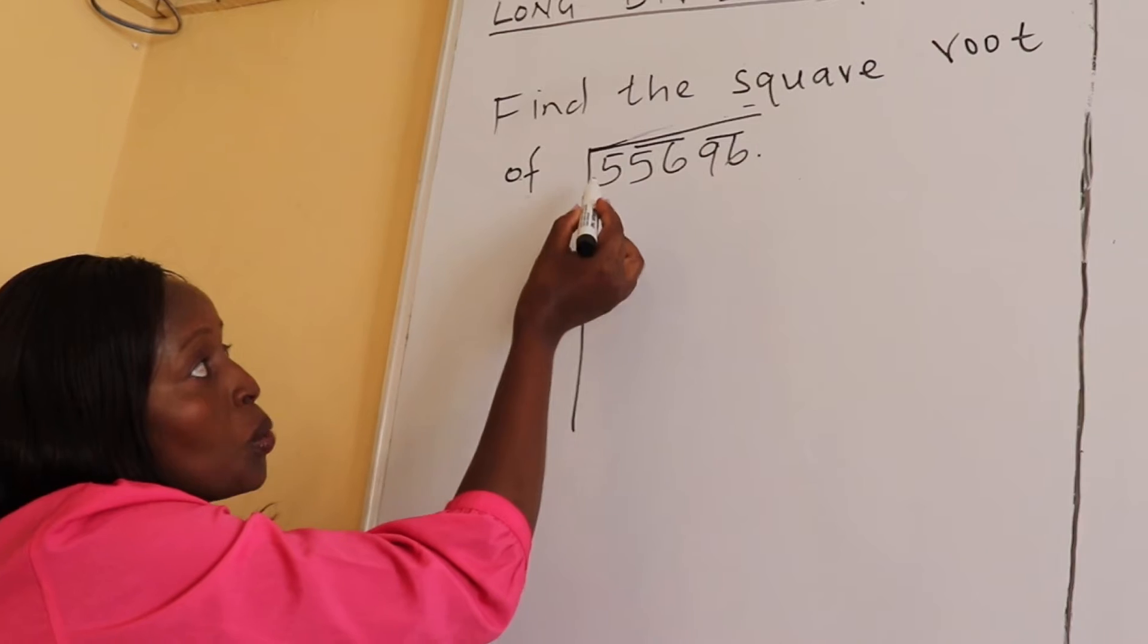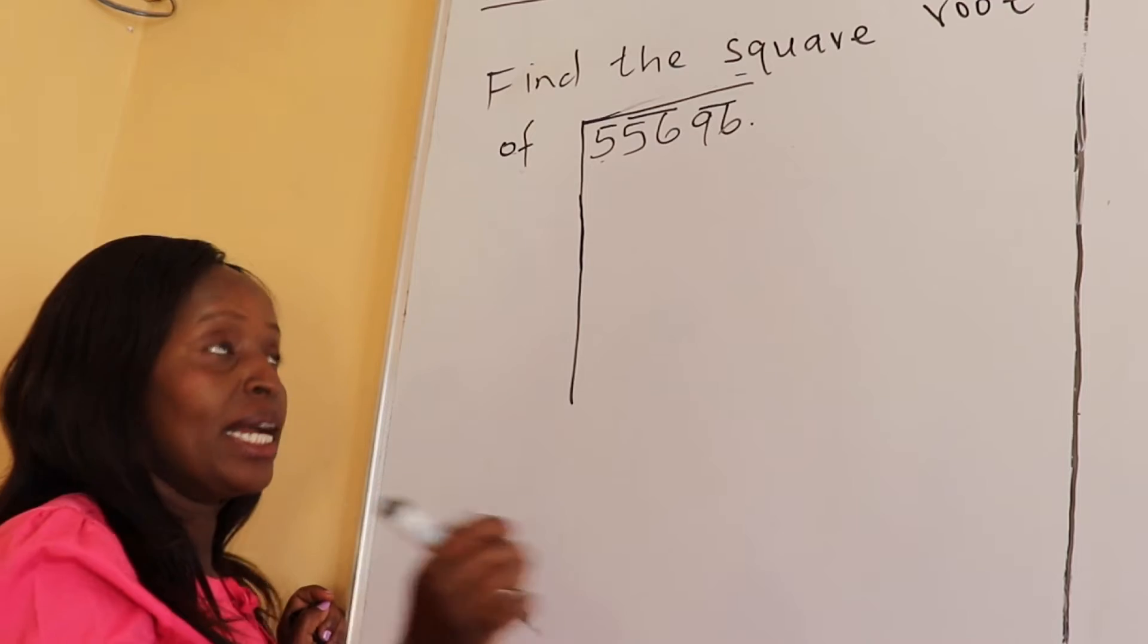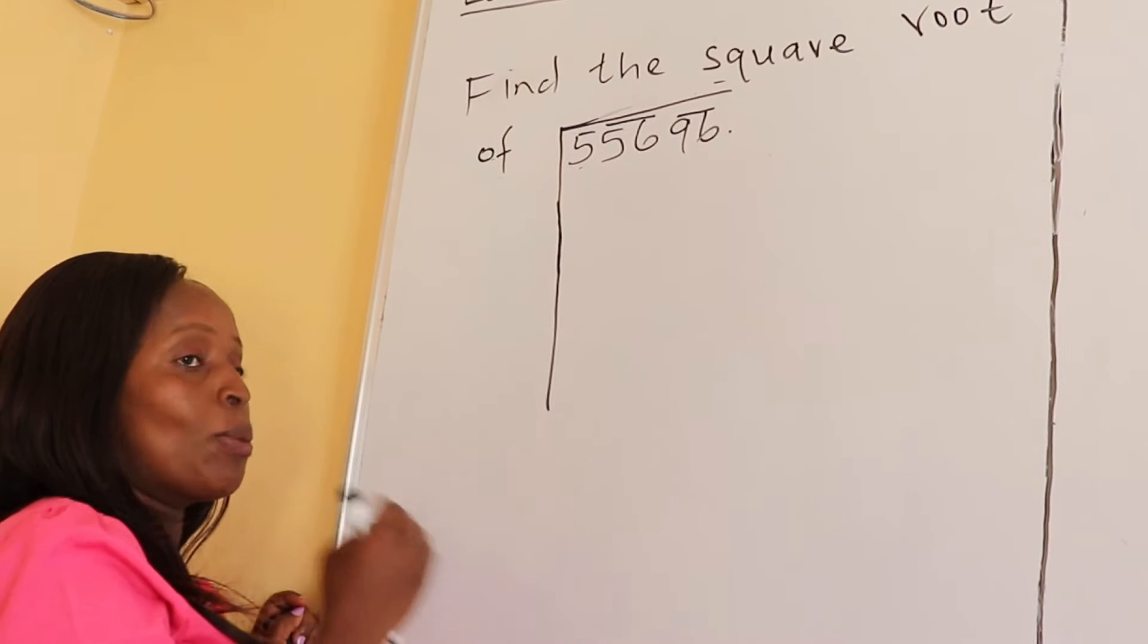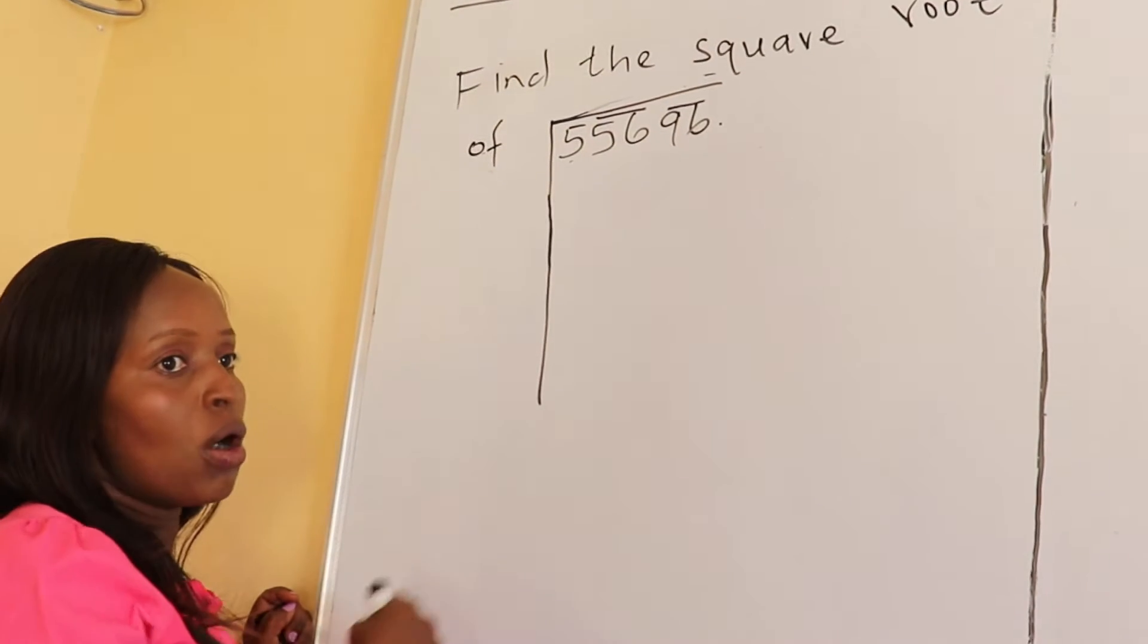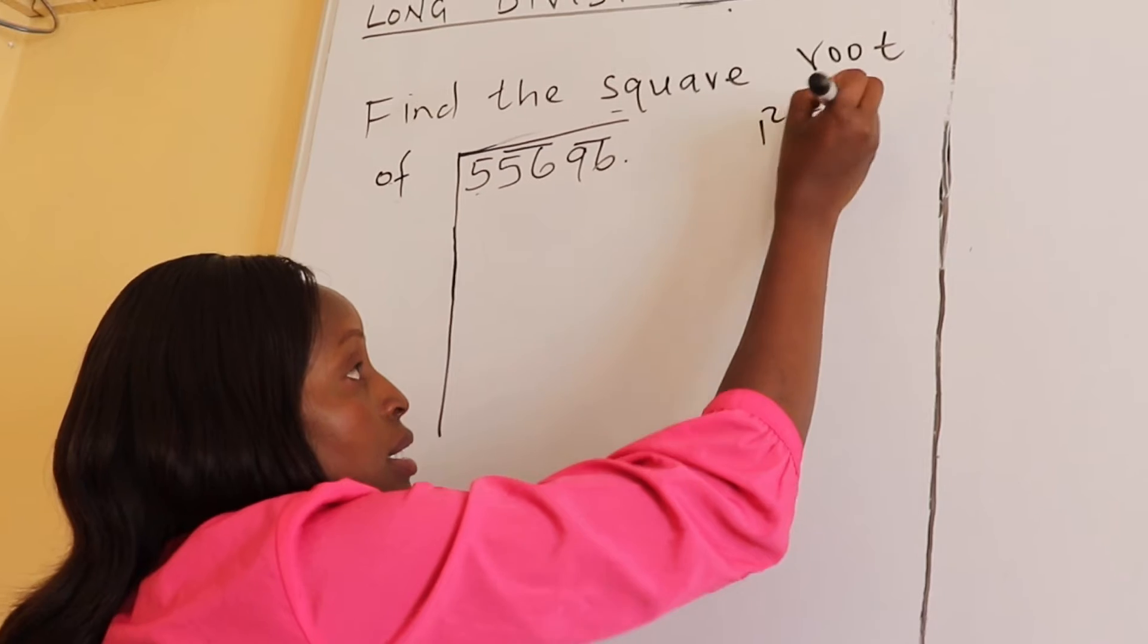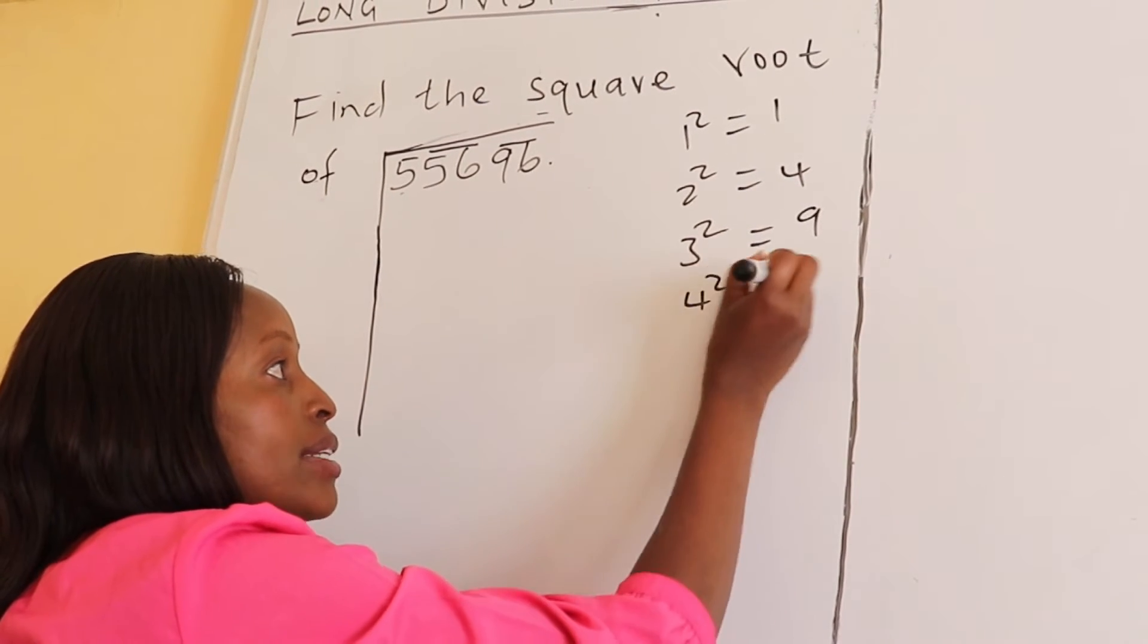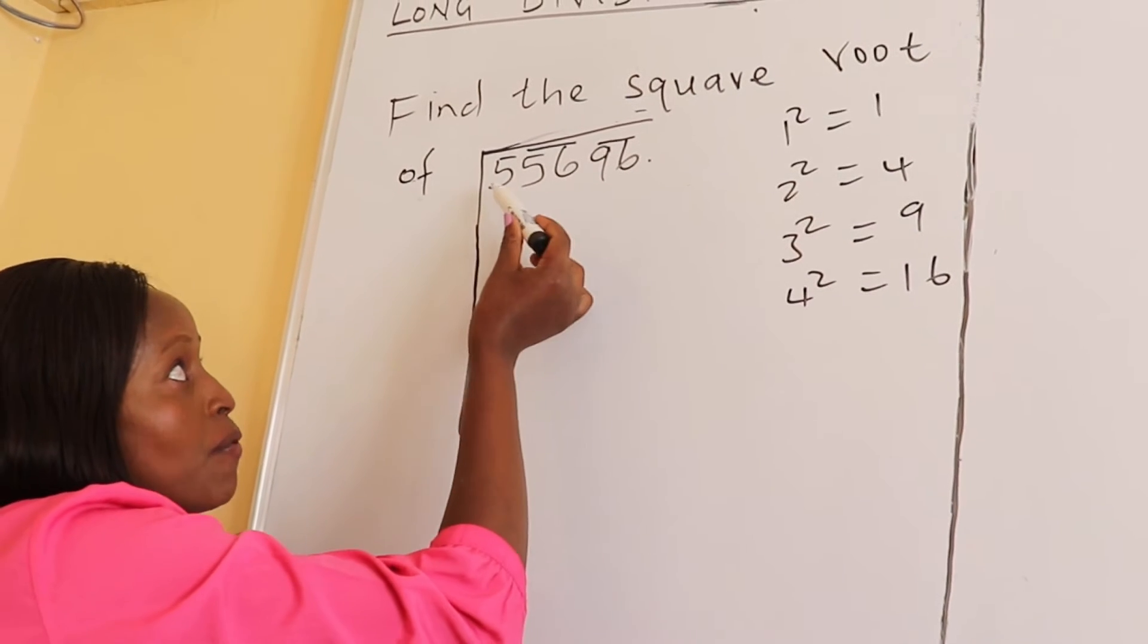Now you come to the first digit here. You look for a perfect square that is exactly like 5 or below it. You can't pick a perfect square that is above it. So let's get squares of numbers: 1 squared is 1, 2 squared is 4, 3 squared is 9, and 4 squared is 16.